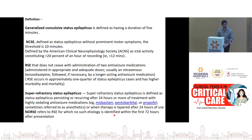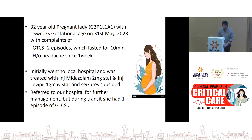NORSE — new-onset refractory status epilepticus — is when a patient presents for the first time with seizures without any identified cause within the first 72 hours. Some authors also include autoimmune and post-viral etiologies as NORSE if they present first time with known etiologies. The incidence of status epilepticus is about 20 to 30% among epileptic patients. NORSE accounts for roughly 20% of status epilepticus cases in some studies.